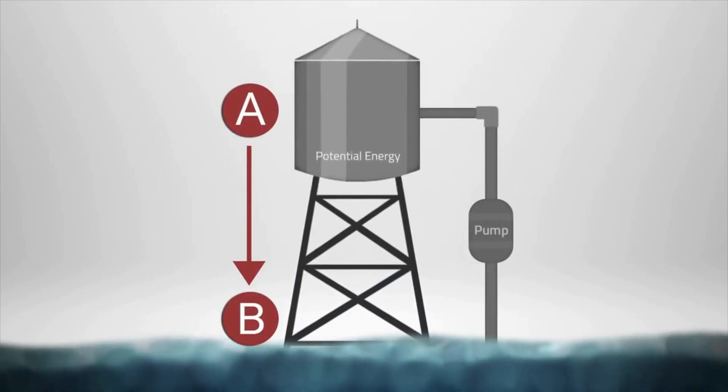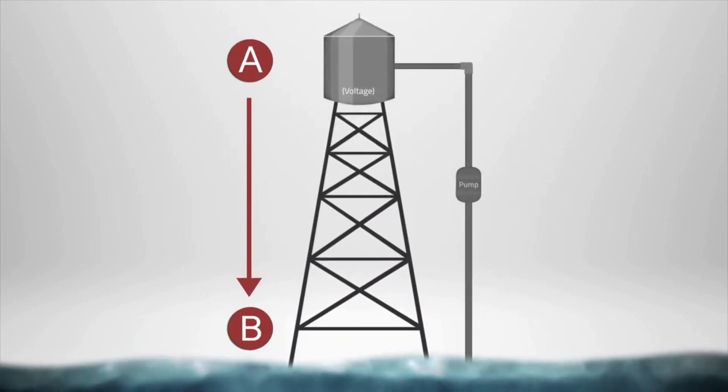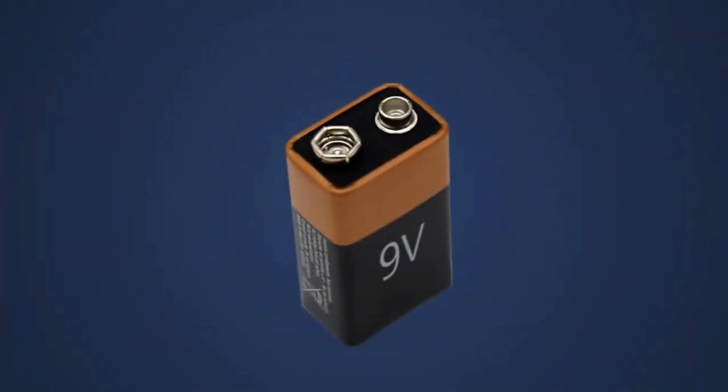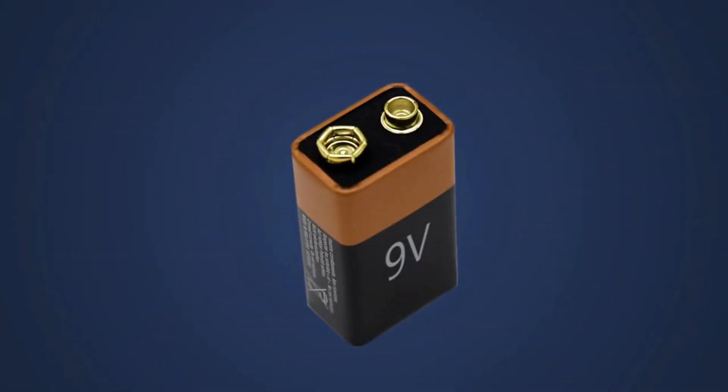The potential energy, which again can be thought of as voltage, would rise if we increase the difference between the two points. Voltage is always in reference to a difference between two points. Even when we're talking about a nine volt battery, what we're really saying is the difference between the two terminals is nine volts.